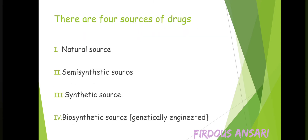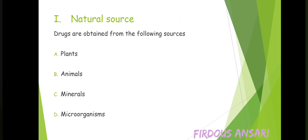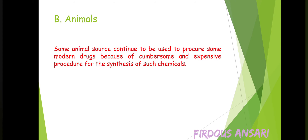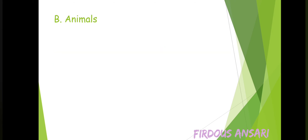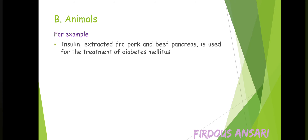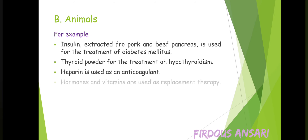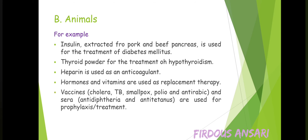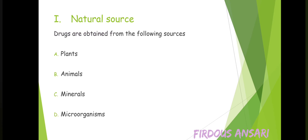This was all about the plant source within the natural source category. Next is the animal source. Some animal sources continue to be used to produce modern drugs due to the complex and expensive procedures for synthesizing such chemicals. Examples: insulin extracted from pork and beef pancreas for the treatment of diabetes mellitus; thyroid powder for hypothyroidism; heparin as an anticoagulant; hormones and vitamins as replacement therapy; vaccines such as cholera, tuberculosis, smallpox, polio, and anti-rabic; and sera like anti-diphtheria and anti-tetanus for prophylaxis or treatment.